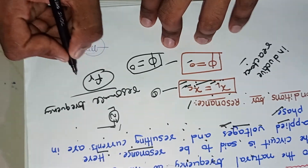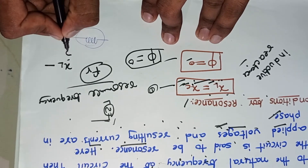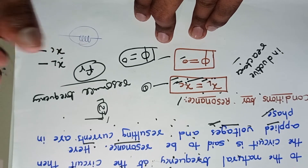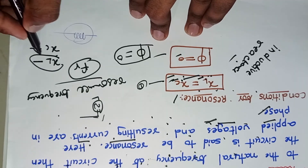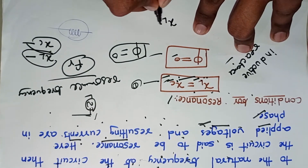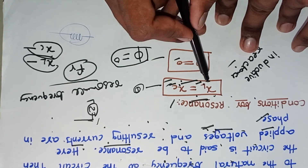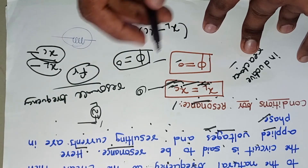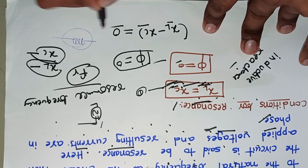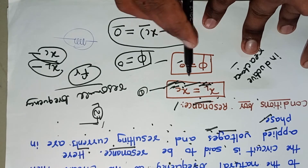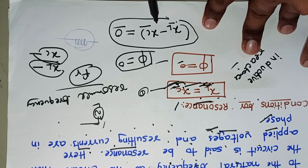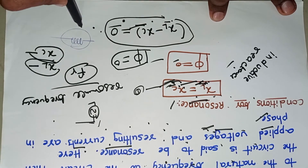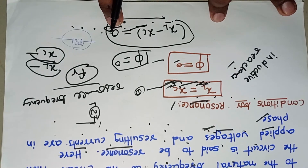XL is the inductive reactance and XC is the capacitive reactance. The total reactance of a circuit is the difference between inductive reactance and capacitive reactance — that is XL minus XC. From the resonance condition, we know XL equals XC, so both are the same. Their difference results in zero. Therefore, in a resonance circuit, the total reactance is equal to zero.